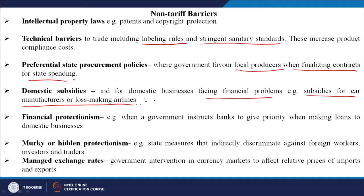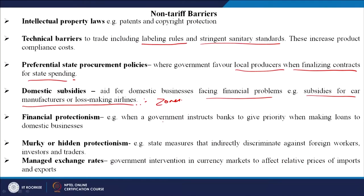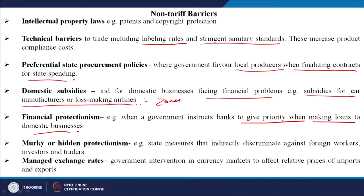Regarding Air India, for example, flying zones and licenses are given to make them more competitive. Financial protectionism is when a government instructs banks to give priority when making loans to domestic businesses — it should be equal for everybody, but the government asks banks to give domestic businesses a first-mover advantage. Murky or hidden protectionism refers to state measures that indirectly discriminate against foreign workers, investors, and traders. This kind of hidden protectionism is not advisable, but sometimes it is required to support the domestic market.